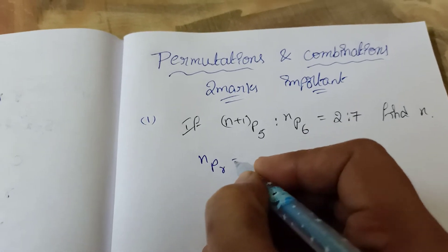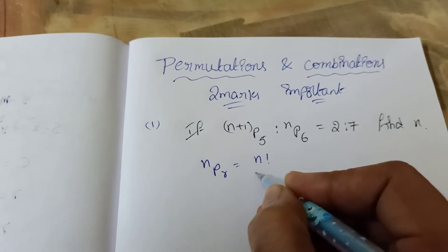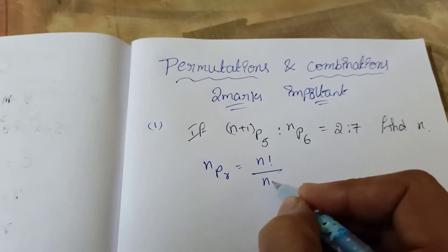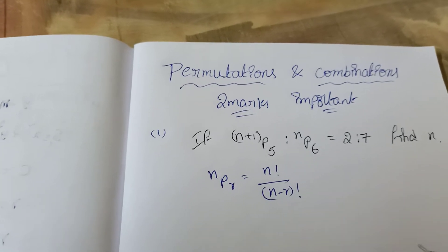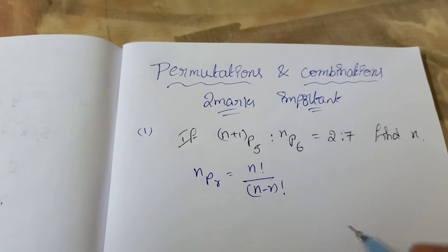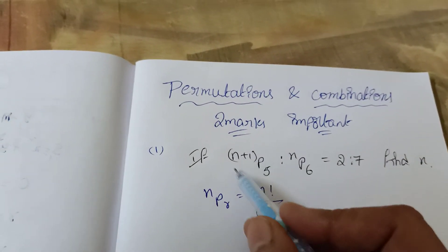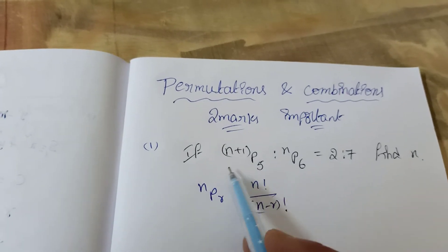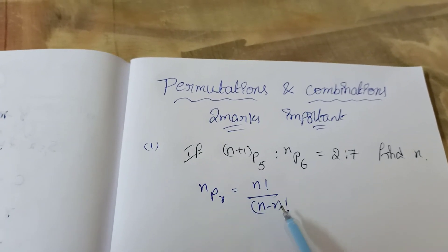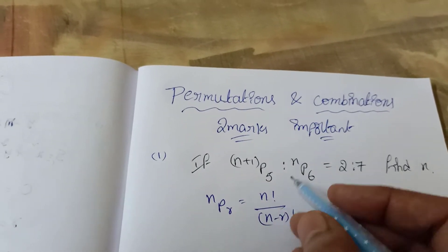nPr equals n factorial divided by (n minus r) factorial. So (n+1)P5 means (n+1) factorial divided by (n+1 minus 5) factorial.